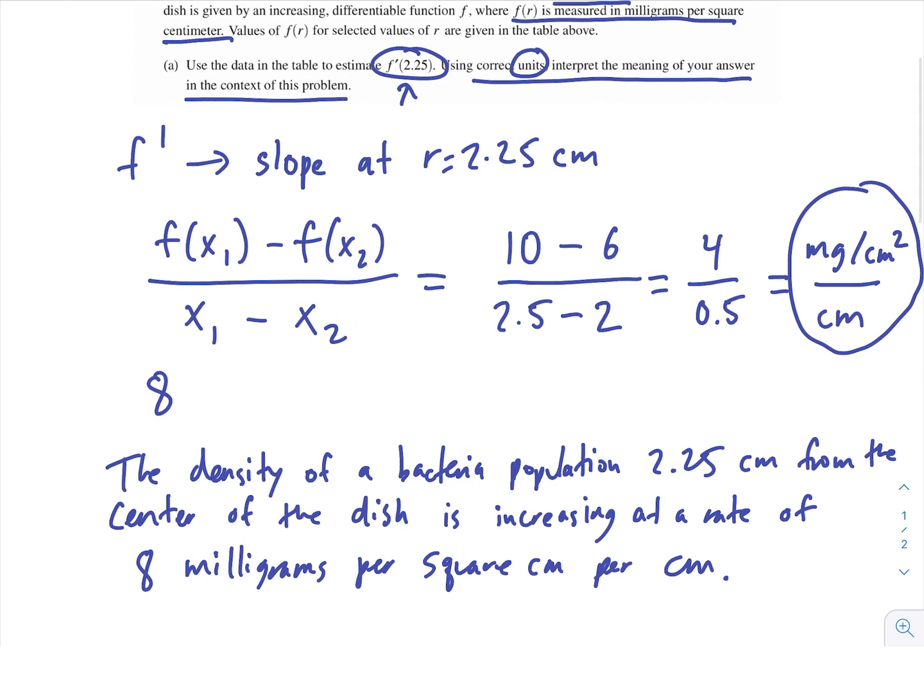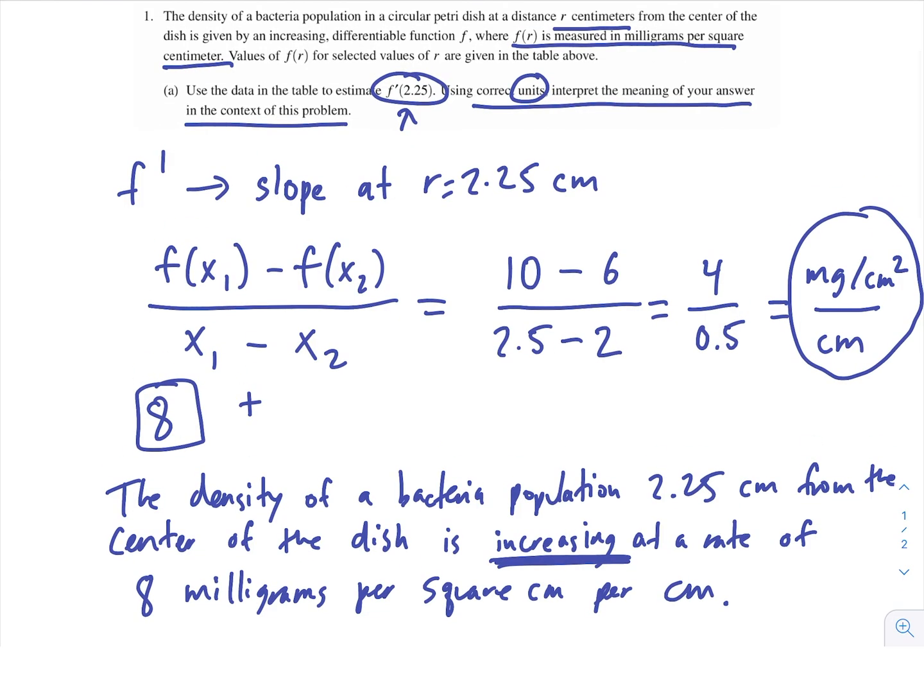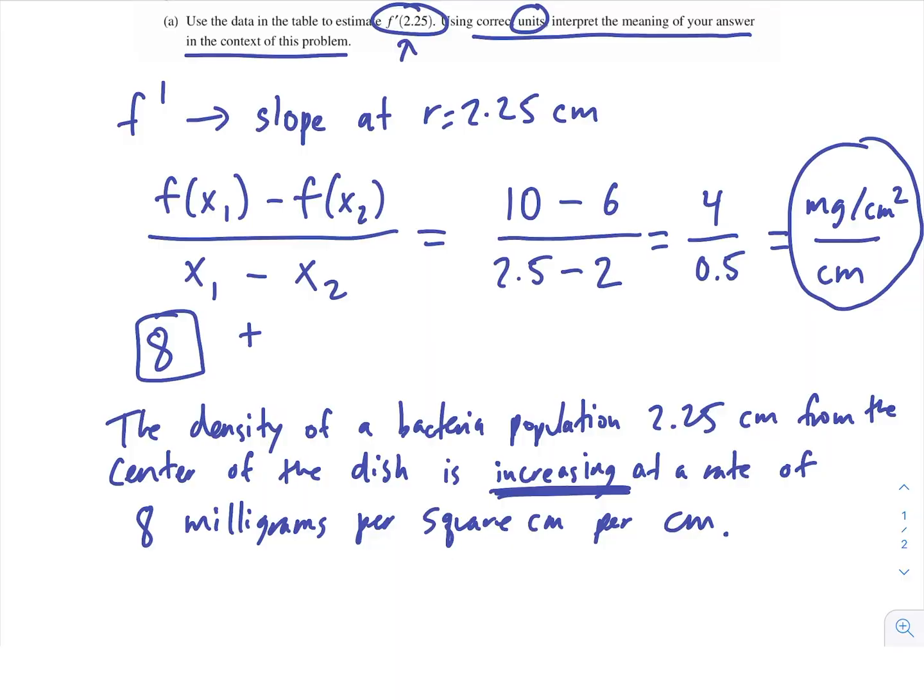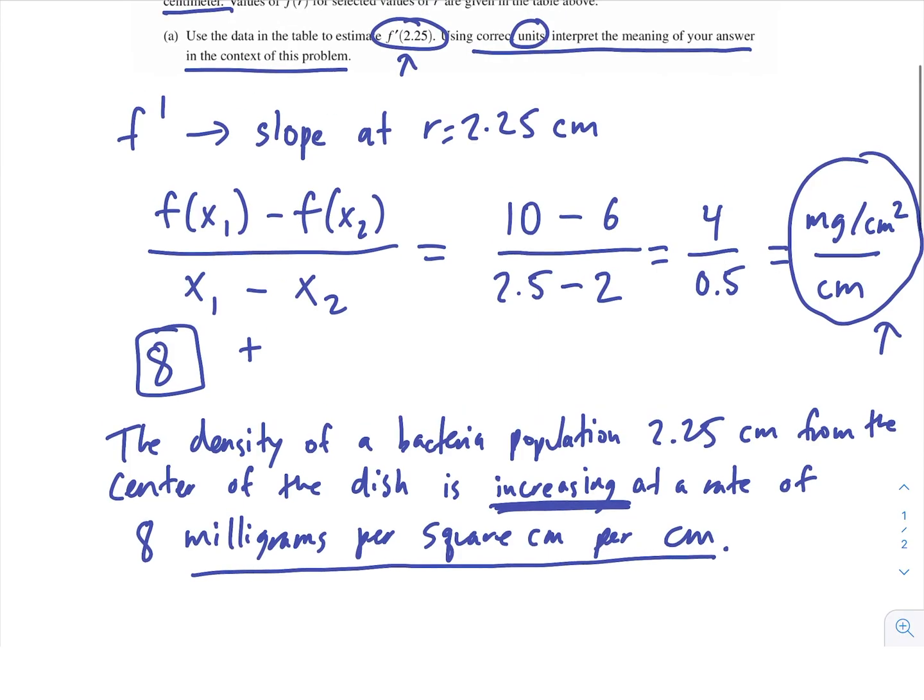And so there's one really important thing that I'd like to point out in my answer, and that's the fact that I used increasing. And how can I tell that it's increasing? Well, the answer that I got, 8, was positive. It wasn't negative. If it was negative, we would have a negative slope, and that would mean that our density is decreasing. But since it's positive, as the distance r increases, the density of the bacteria population is also increasing. So I included increasing, and then I also included my answer and these units that I got from my little trick. And that's how you solve part A.